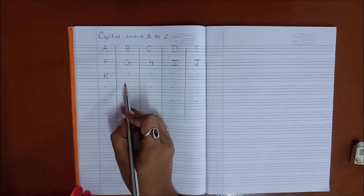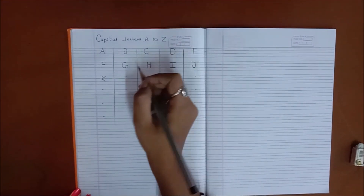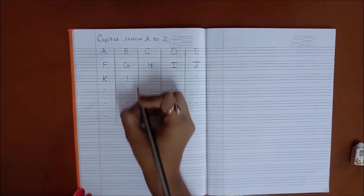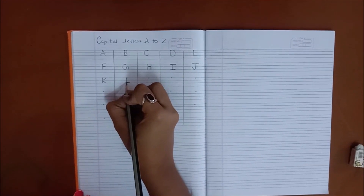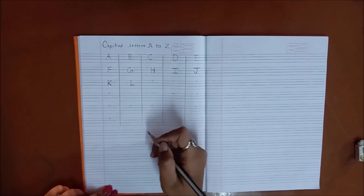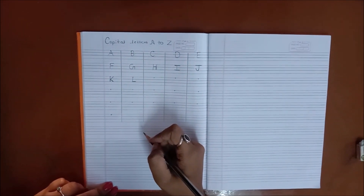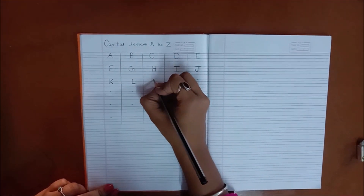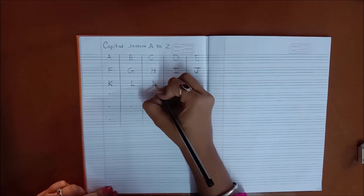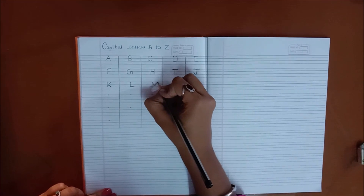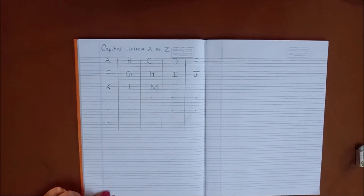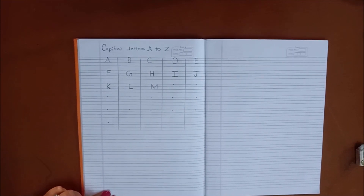After K, letter L. To write letter L, we will make a standing line and a sleeping line. This is called capital letter L. After L, letter M. To write capital M, we will make a standing line, then a slanting line, another slanting line, and a standing line. This is called letter M.